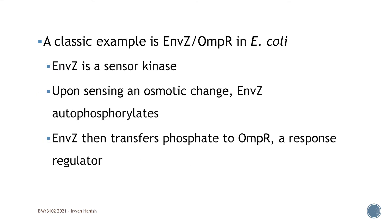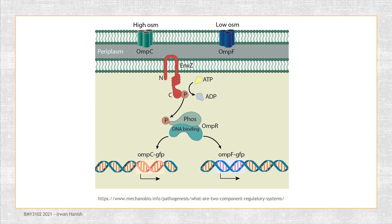A classic, well-studied example of the two-component regulatory system is in E. coli: it's called the ENVZ-OMPR system. ENVZ is the sensor kinase and OMPR is the response regulator. I'll leave you a link to an article — it's a less technical explanation, understandable to first-year students — that has a fuller story of the ENVZ-OMPR system and its regulatory role in osmolarity. For now, just focus on the two-component regulatory system.